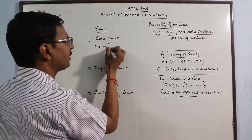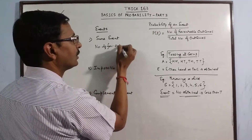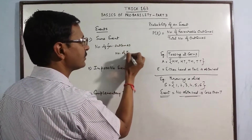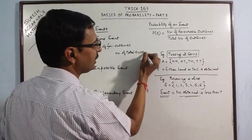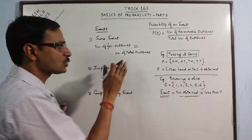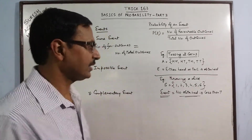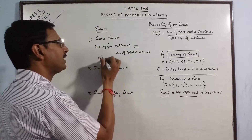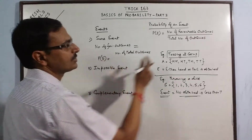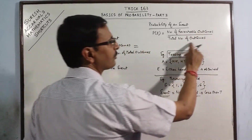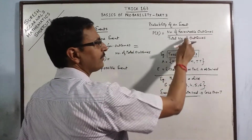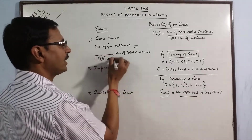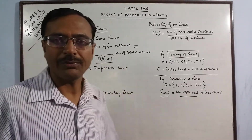Here, the number of favorable outcomes and the number of total outcomes are actually equal. So whenever these two things become equal, the event is called a sure event. In turn, the probability of that event — number of favorable outcomes divided by number of total outcomes — both are equal, so they cancel out and the probability becomes 1. Every sure event has a probability of 1.